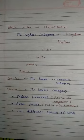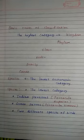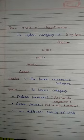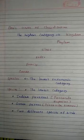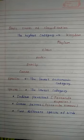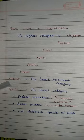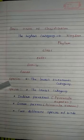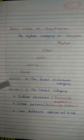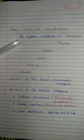Let us see the basic units of classification: Kingdom, Phylum, Class, Order, Family, Genus, and Species. Species is the lowest taxonomic category and Kingdom is the highest category.